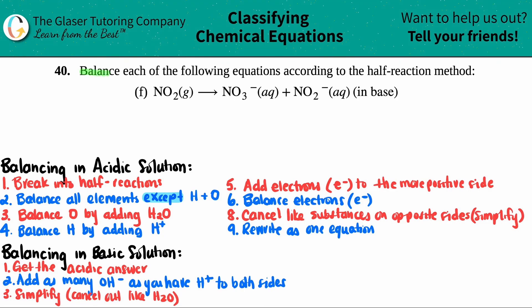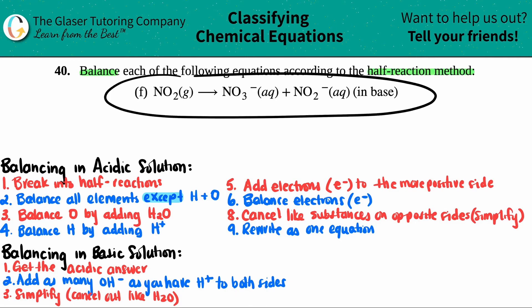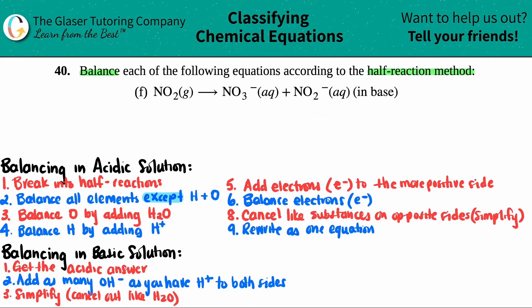Number 40: balance each of the following equations according to the half-reaction method. We have letter F. In this case, we have to balance NO₂ gas, which will yield nitrate ion (NO₃⁻) and then nitrite ion (NO₂⁻), and we have to balance this in basic conditions.